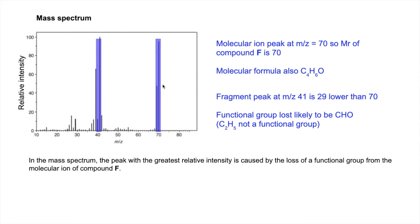So that drop in 29 to create that fragment peak there is most likely due to the loss of the CHO group. So therefore compound F is now looking like it's an aldehyde.